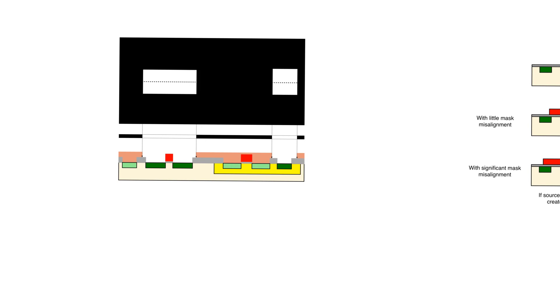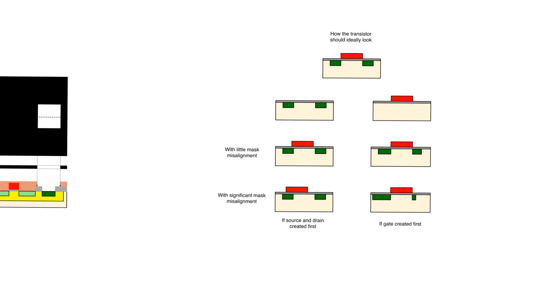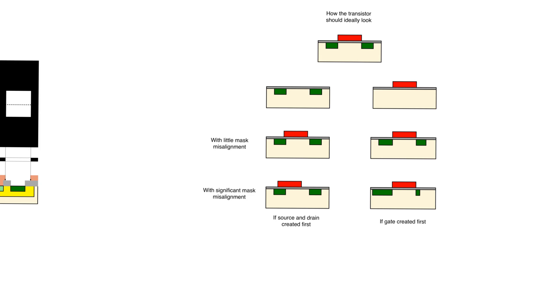It's important to understand why we created the gates first and then implanted the sources and drains — this is called the self-aligned process. If we had created the sources and drains first, and then the transistor gates, there is an inevitable mismatch or misalignment between masks of different layers. We will do our best to minimize misalignment, but zero misalignment can never be assumed. Any misalignment between the transistor gate and the source and drain will lead to the gate not covering the entire channel, causing loss of electrostatic control over the channel, which can also lead to loss of transistor action altogether.